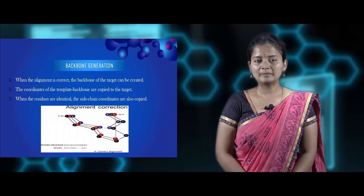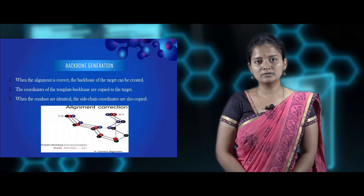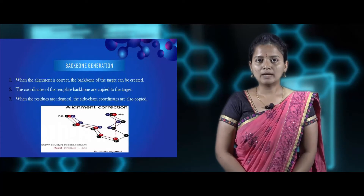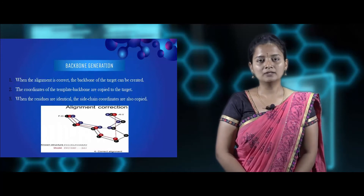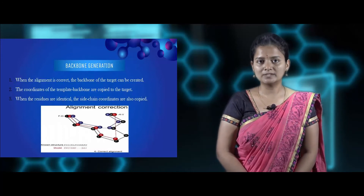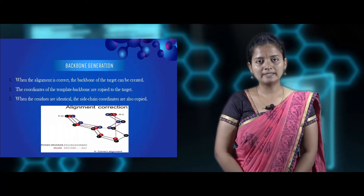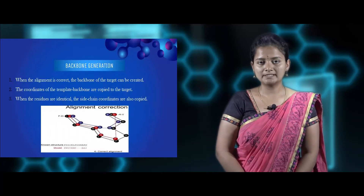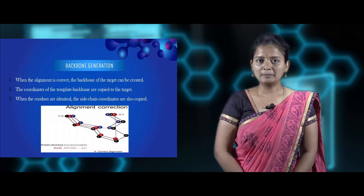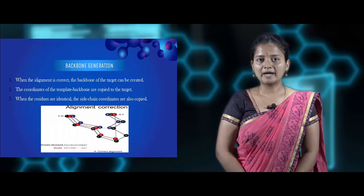The third step is backbone generation. When the alignment correction is perfect and alignment is good, we have to do the backbone generation — that is, create backbone residues for the target sequence. The coordinates of the template sequence are copied to the target sequence. In some cases the residues of the template sequence are the same as the target sequence, so we can copy those residues directly. For example, if the amino acid proline is present at position 12 in both sequences, the residue can be copied directly.